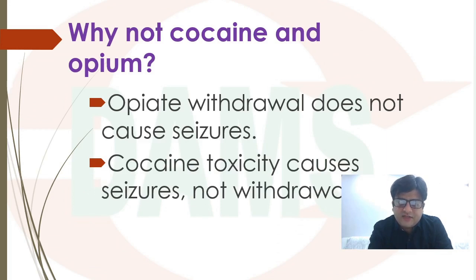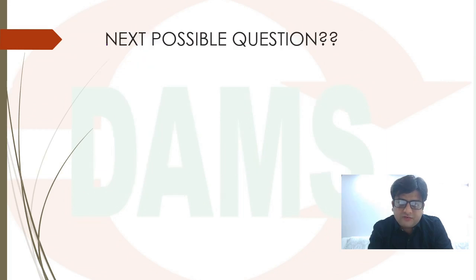Why not cocaine or opium? Opiate withdrawal doesn't cause seizures — seizures are seen in opium intoxication. Cocaine toxicity can cause seizures, but cocaine withdrawal does not. So the other options are clearly ruled out.